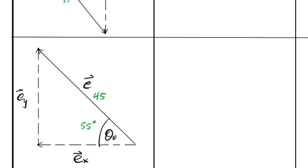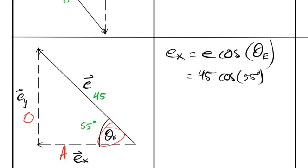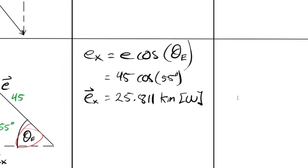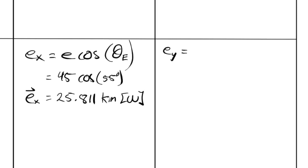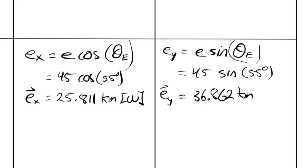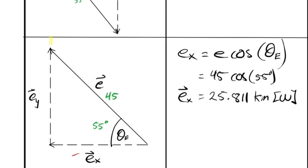EX is equal to E cos theta E. So that's 45 cos of 55 degrees. So that's equal to 25.811 kilometers. And that is going west. If the X component is cos, the Y component 100% is sine, substituting in 45 sine of 55 degrees. So EY is equal to 36.862 kilometers. And that is heading north. So finally, we're ready to actually calculate the components of X and Y. So we're looking for the resultant in each case. So we're going to look for the resultant in X and the resultant in Y.